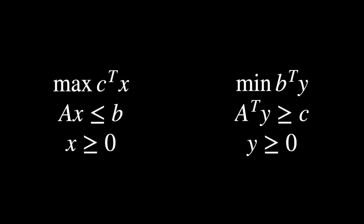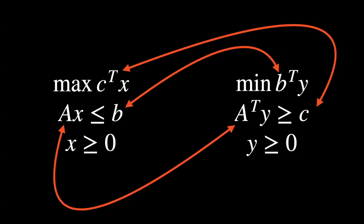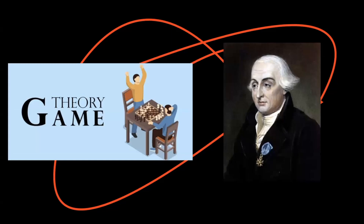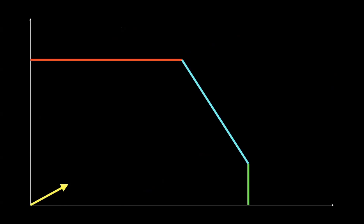Let's talk about duality. You may have encountered the formula for constructing the dual linear program from the primal — transposing matrices, swapping max to min — and maybe memorized it without it making sense. Today we're going to make it all make sense using a little game theory and the help of Lagrange. Lagrange came up with a really interesting perspective on constrained optimization problems.